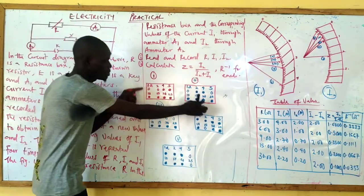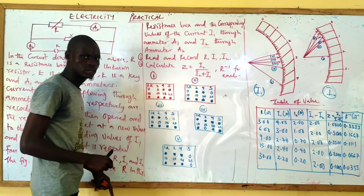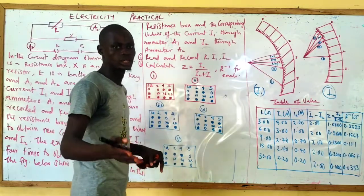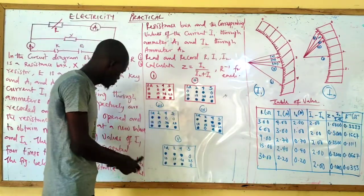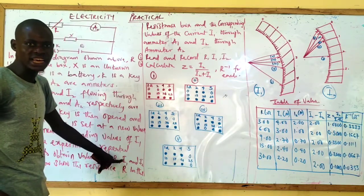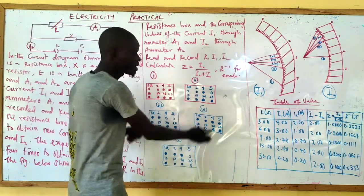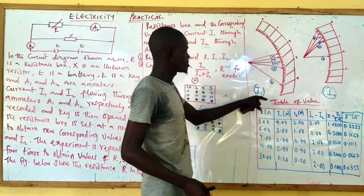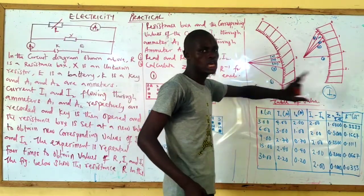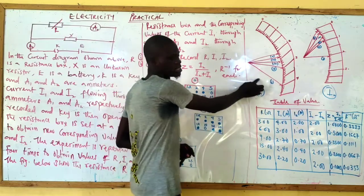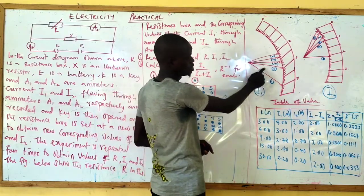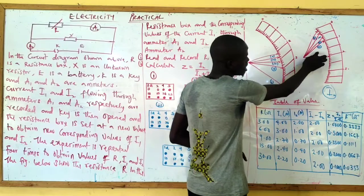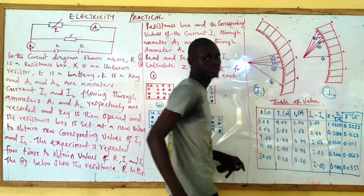Now, how do we record? This symbol here is the symbol for a resistance box. In alternative-to-practical in GCE, you are given all the values to measure. The basics we need to measure are: our resistance, current I1, and current I2. This is my current I1 here, and this is my current I2. If we check, you notice that we are given five readings — reading 1, second reading, third reading, fourth reading, and fifth reading. Everything has been given to us.